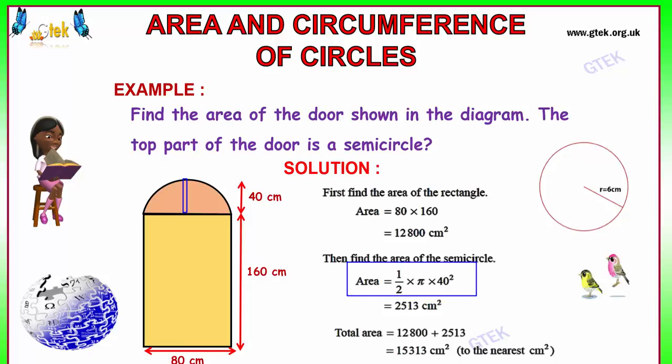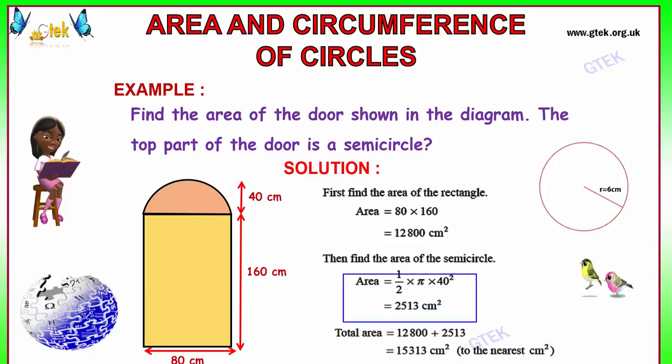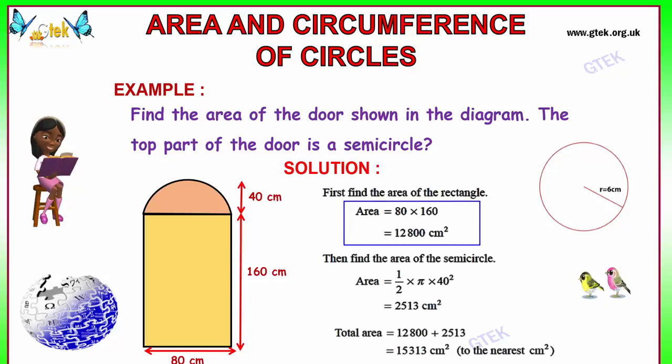Pi is equal to 3.14 and 40 square. We got the area as 2,513 cm square. The area of the rectangle is 12,800, area of the semicircle is 2,513. The total area is equal to adding both, we get 15,313 cm square.